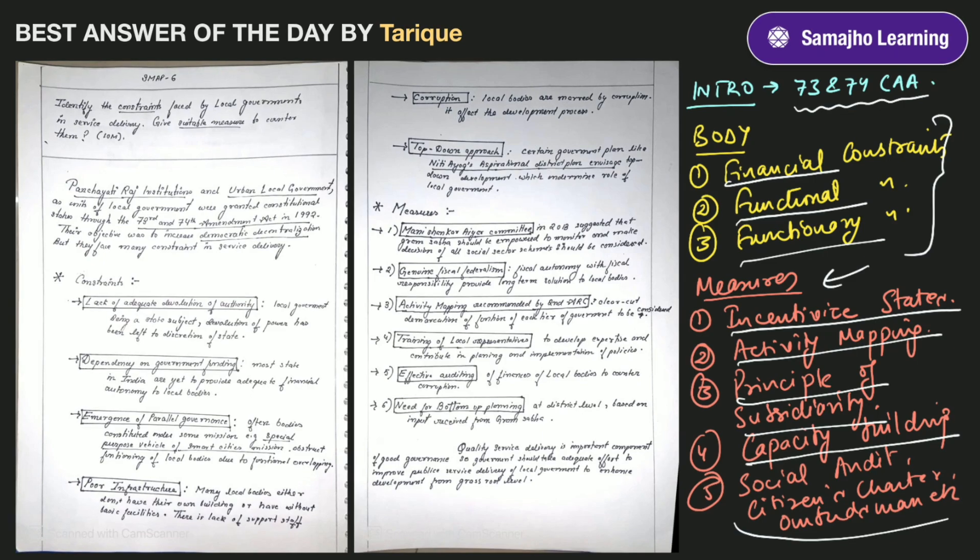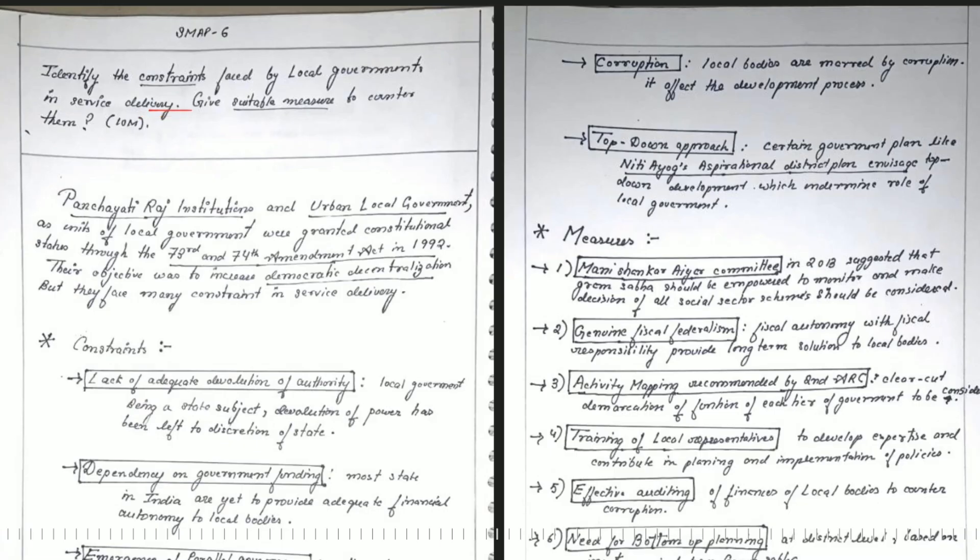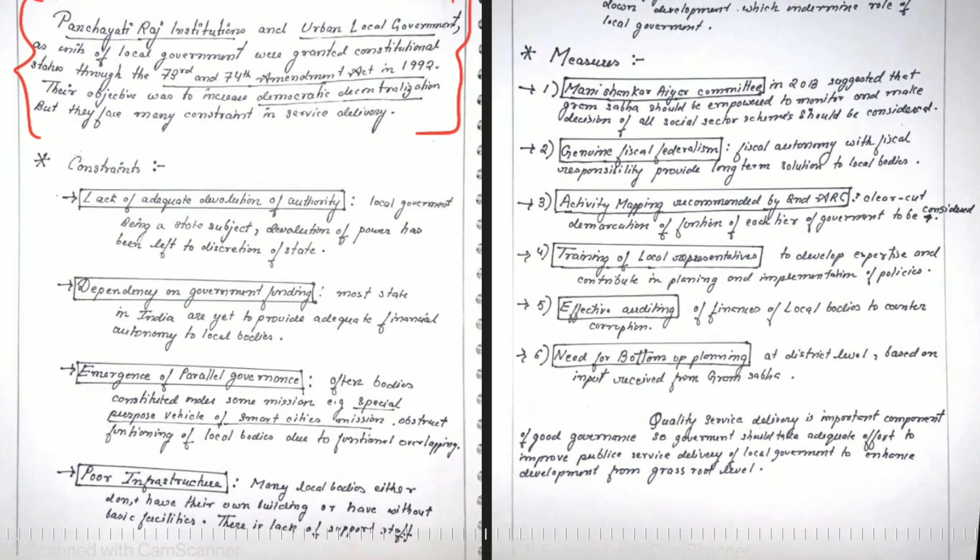Now let's review the best answer. First thing I notice is the answer is inside the word limit which is good. The answer is for 15 marks as it should be. The introduction is perfectly done where you are talking about the amendments, urban local bodies and panchayati raj institutions. Then immediately you jump to the body where you start with the constraints.